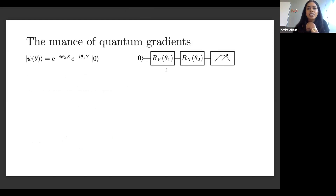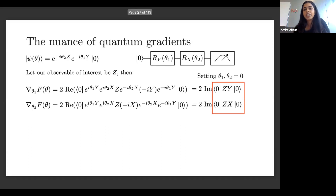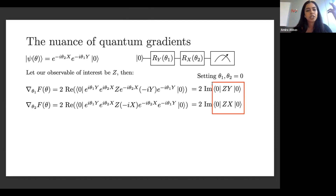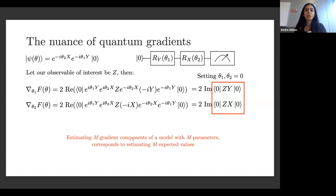With multiple parameters — say a rotation about the X-axis and another about the Y-axis — each gradient component reduces in the simplified setting to estimating expectation values. If we had m parameters in our model, we'd have to estimate m expectation values naively, each with respect to operators that don't necessarily commute. This gives intuition for why things are more nuanced in the quantum setting, because when dealing with quantum states we have to sample.